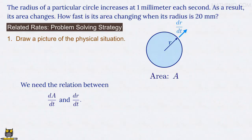The rate at which the area A changes, dA/dt, is thus somehow related to the rate at which the radius r changes, dr/dt. Our job is to find the exact relationship between those two quantities.